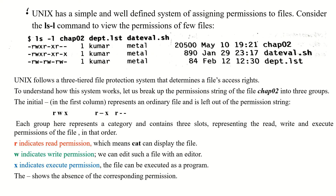We have to log in with the username kumar for these privileges to apply to us. The second group r-x has a hyphen in the middle slot, indicating absence of write permission for the group owner. The group owner is 'metal', and all users belonging to the metal group have read and execute permissions only. The third group r-x has only read and execute permissions, applicable to others.